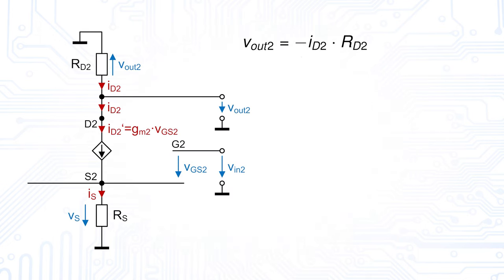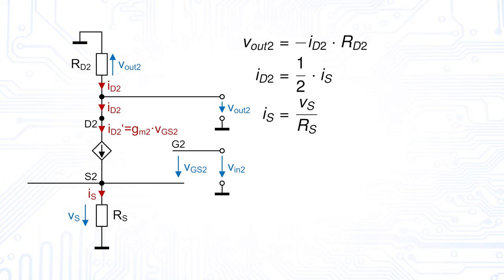The change in Id is half of the change in IS. That's because we assume our circuit to be symmetrical, and therefore the constant current IS must also split symmetrically. If we look at our circuit again, we see that this constant current IS depends on the source voltage VS and the source resistor RS. Since RS is constant, any change in IS has to come from a change in VS. We use this to introduce our common mode voltage into the equation. Our approach here is to assume that Vgs is constant, and consequently our small signal Vgs is zero. Therefore, we assume the small signal voltage drop across the resistor RS to be equal to the small signal common mode input voltage. With this substitution and by rearranging the resulting equation, we get our final formula for the common mode gain.